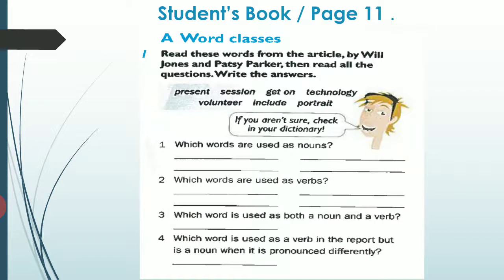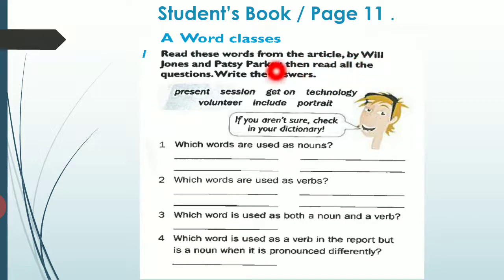Let's start with your student book page 11. I want you Sabah to open the book with me and to write the meaning of the words, the answers, and the notes. So let's start with exercise number one: Read these words from the article — here we mean the portrait project, درسنا إلي أخذنا سابه، by Will Jones and Patsy Parker. Then read all the questions and write the answers. Let me read the words and tell you their meanings.